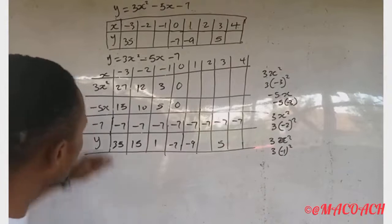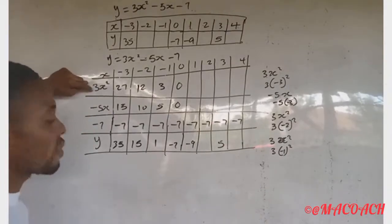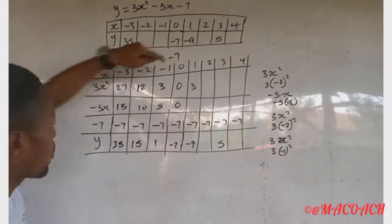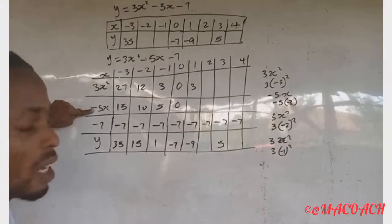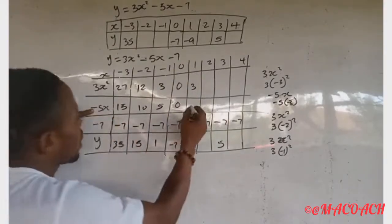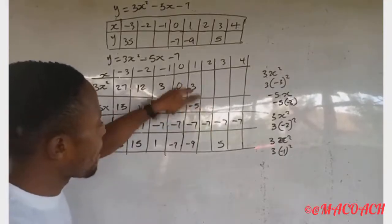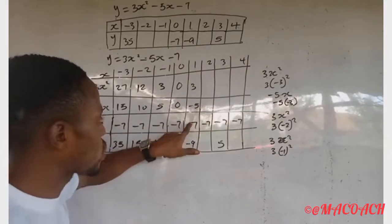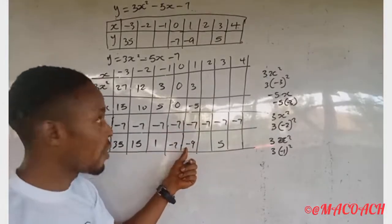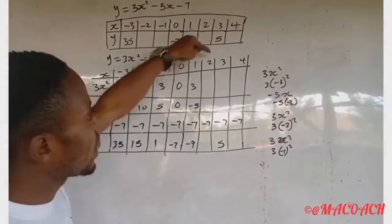When s equals one: three times one squared equals three times one, which is 3. Minus five times one gives minus five. So 3 minus 5 minus 7 equals minus 9. That's how we get minus nine in the table for s equals one.